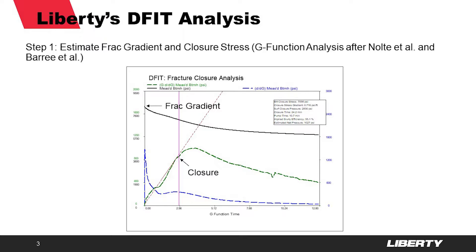From that we can get net pressure and the efficiency of the DFID. The fracture gradient we simply get from the extrapolation of the bottom hole pressure at the end of pumping.